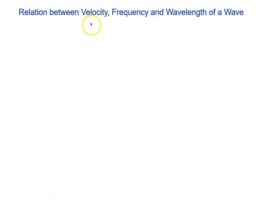Relation between velocity, frequency, and wavelength. If this is a wave, this is known as the crest, and this is the next crest. Distance between crest to crest is known as the wavelength, lambda. Time taken from one crest to another crest is known as the time period, capital T.